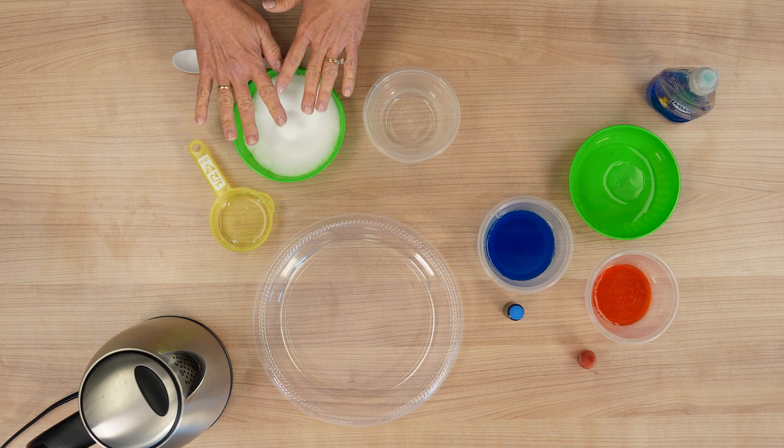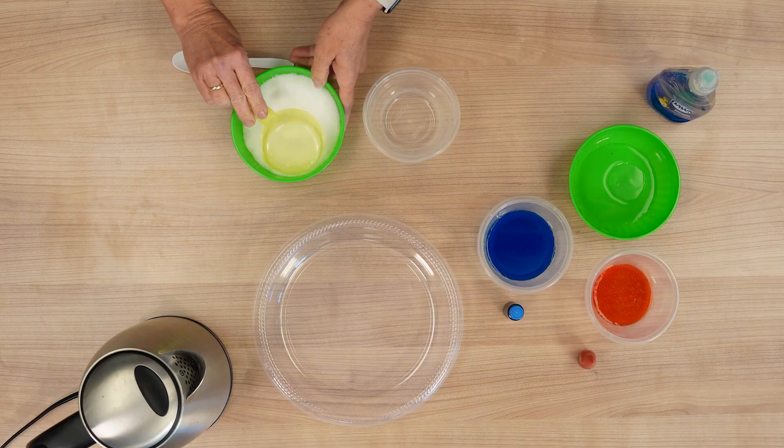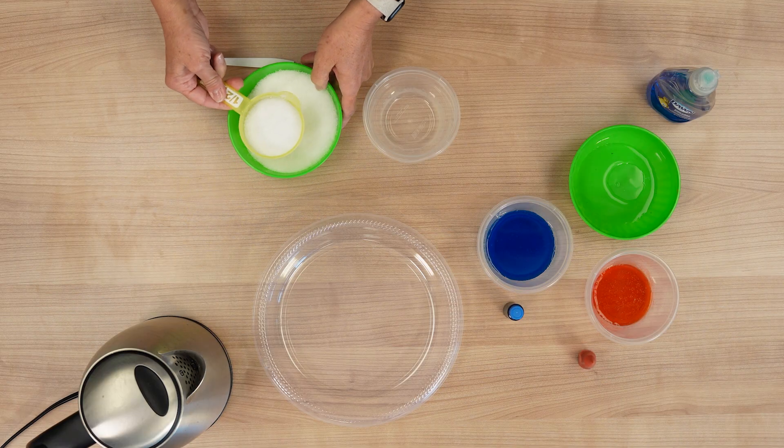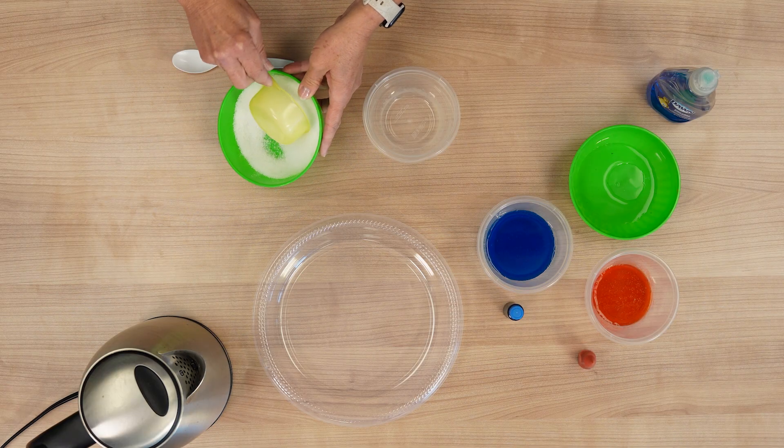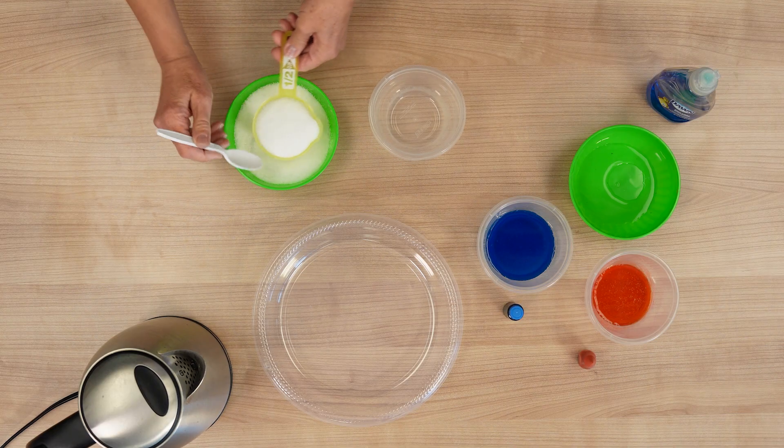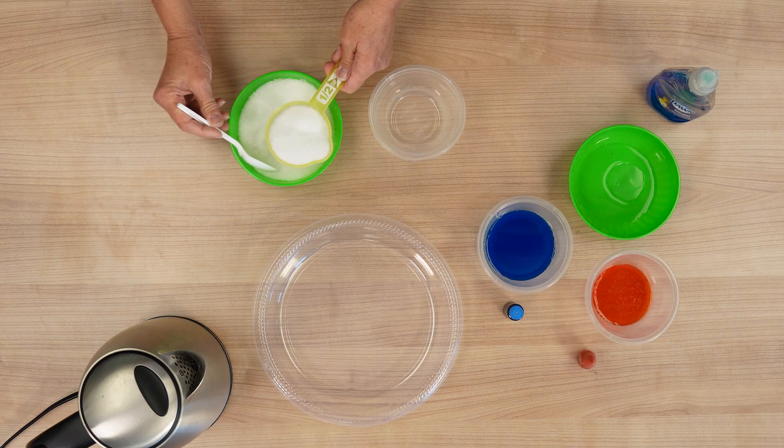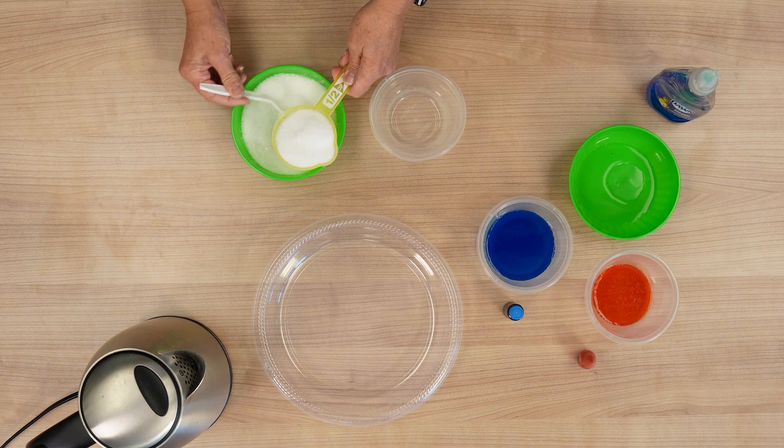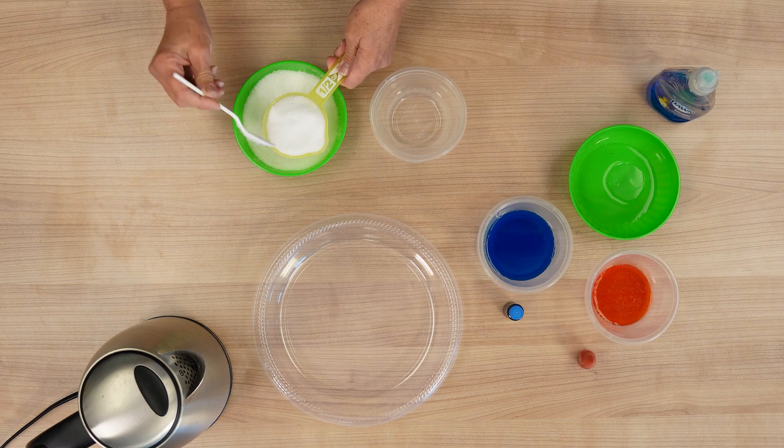Now this is Epsom salts, and you really just need equal parts Epsom salts and water. We're going to put our Epsom salts in—this is about half a cup. If you have a smaller group of kids, you could do a third of a cup because you're only going to be using about a spoonful of this mixture per crew in rotation.